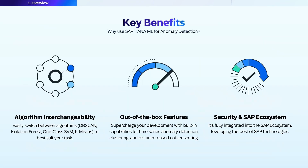Why use SAP HANA machine learning for anomaly detection? There are three main benefits. First, algorithm interchangeability — you can easily switch between different algorithms like DBSCAN, Isolation Forest, One Class Support Vector Machines, and K-means to best suit your specific detection needs. Second, out-of-the-box features that supercharge your development with built-in capabilities for time series anomaly detection, clustering, and distance-based outlier scoring. Third, security and SAP ecosystem integration — it's fully integrated with SAP technologies, leveraging enterprise-grade security and native in-database processing.